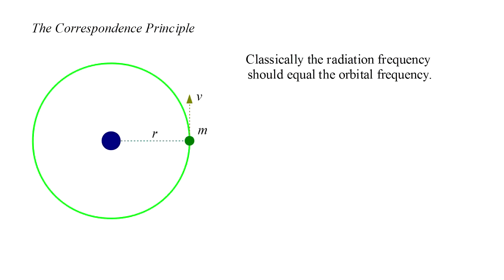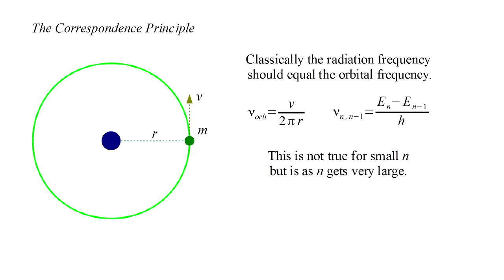But, Bohr pointed out with his correspondence principle, the break is not as sharp as it might seem. Classically, the radiation frequency should equal the orbital frequency. The orbital frequency is the electron velocity divided by the length of the orbit. The radiation frequency from orbit n to orbit n minus one is just the difference of the orbital energies divided by Planck's constant. It is true that these are different for small values of n, but as n gets very large, the values converge.